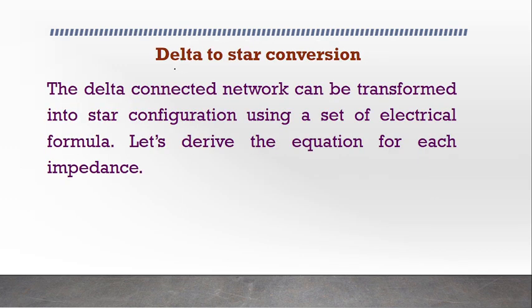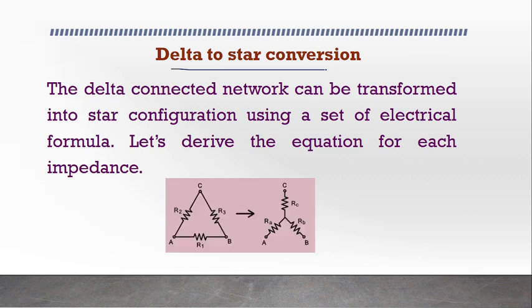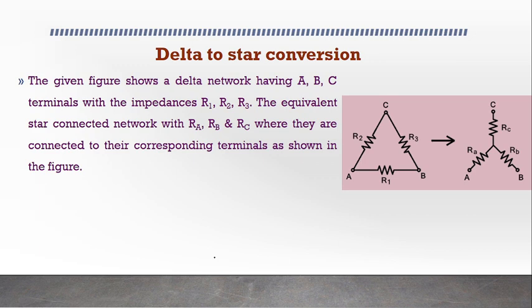First, let us concentrate on delta to star. How an electrical network in delta form can be converted into a star form. This R2 can be mentioned as RAC, this R3 can be mentioned as RBC, this R1 can be mentioned as RAB.